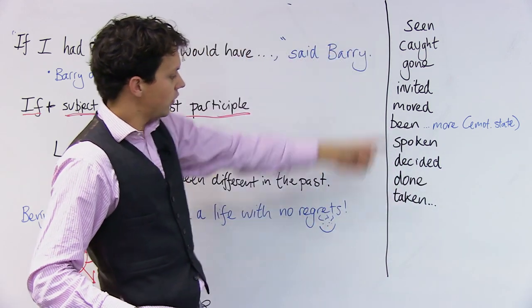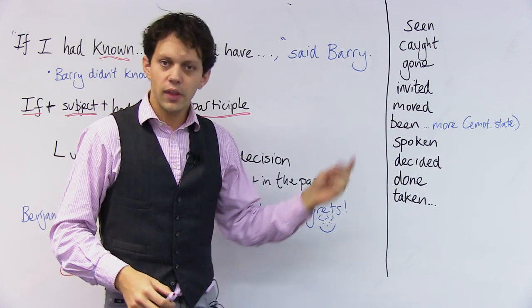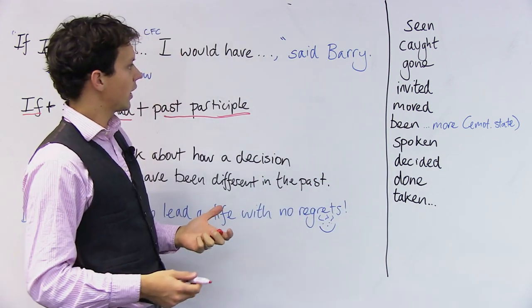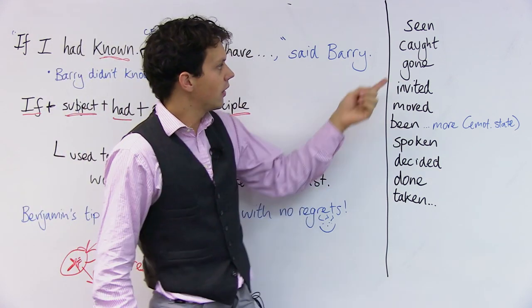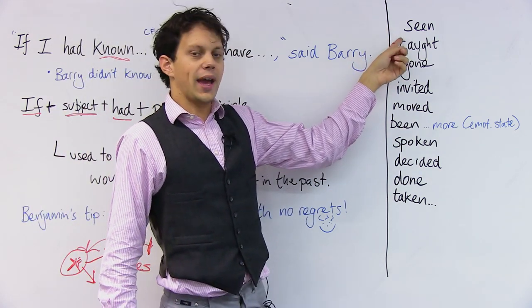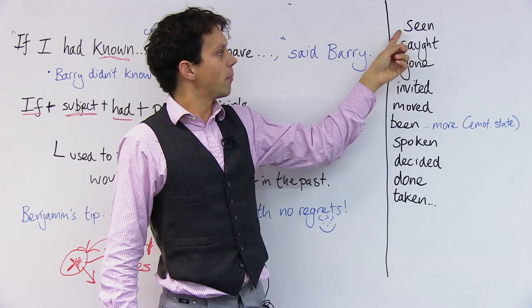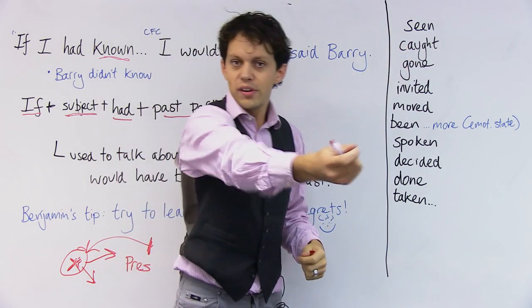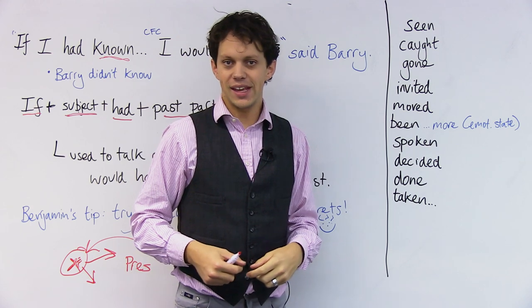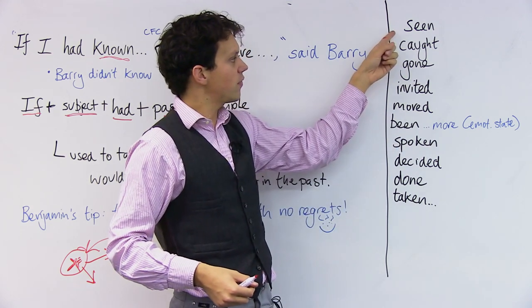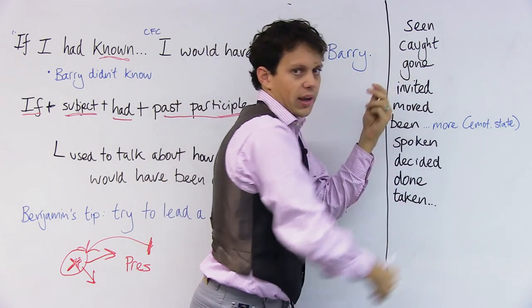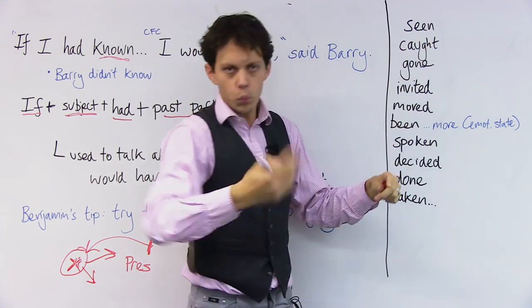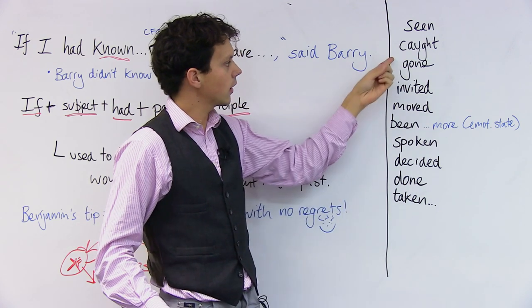Now, here are some past participle forms of verbs that are good to use with this phrase. So let's go, let's do some together. If I had seen Barry, I would have given him his ticket. So if I had past participle seen and then the rest of the phrase Barry, I would have done this.